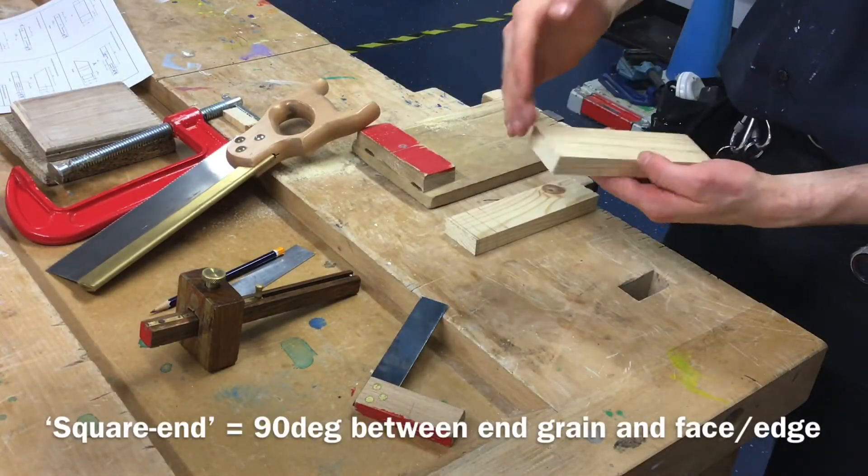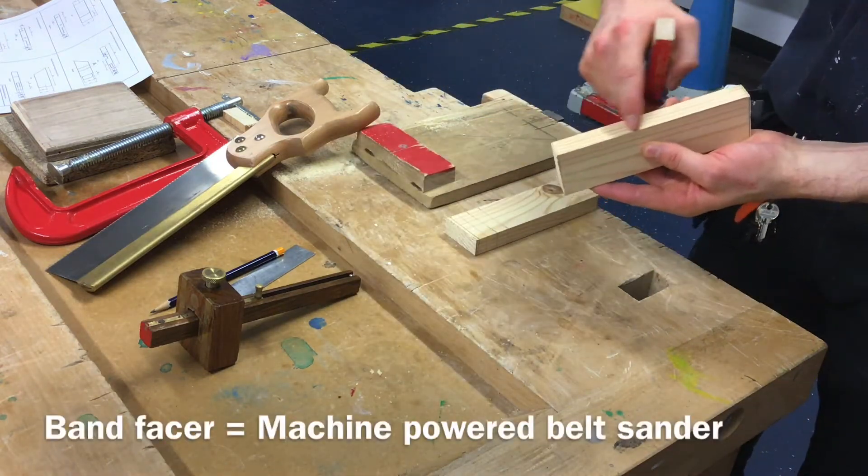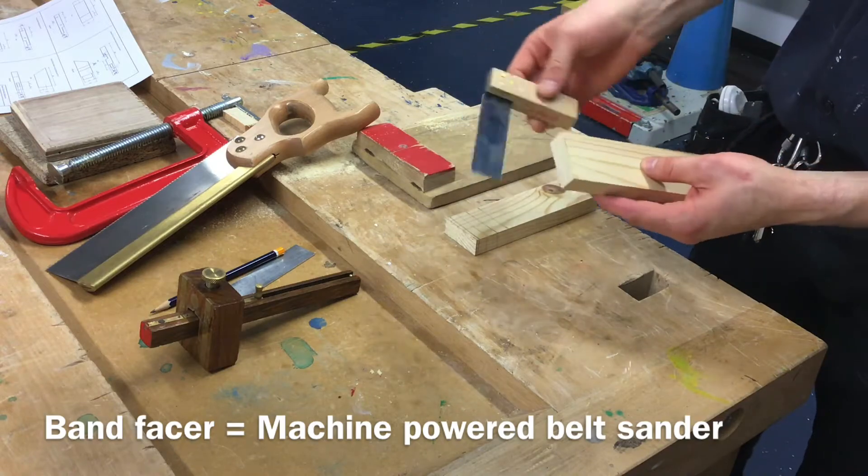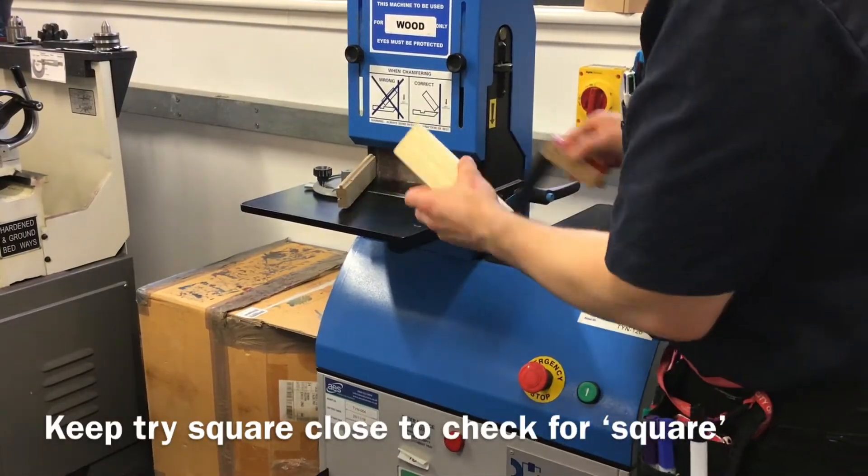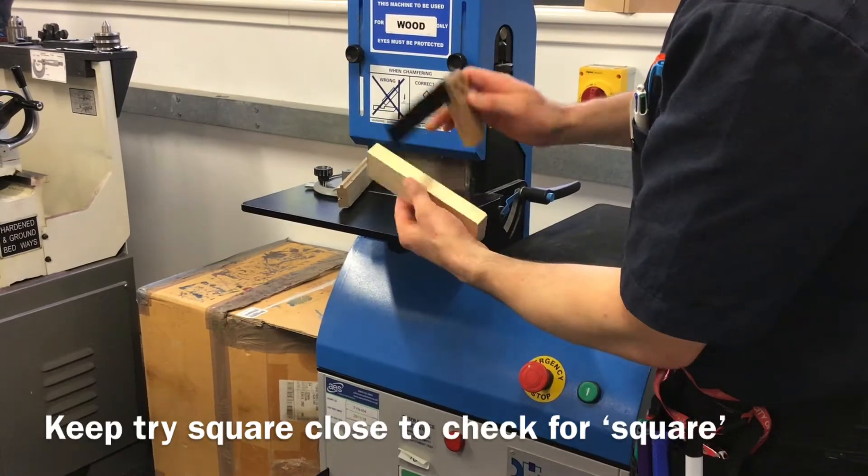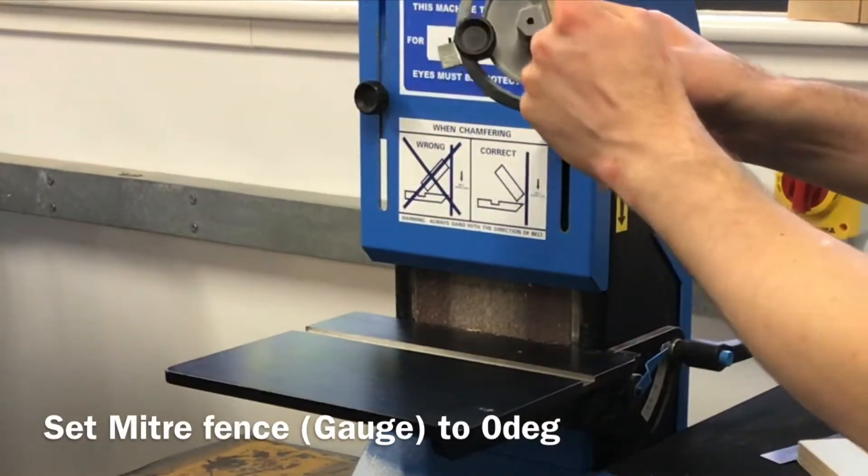Use a band facer to make sure that the angle between the end grain of the material and the face and the edge of the material are at 90 degrees with one another. Keep tri-square handy to always check after you've used your band facer that there's right angles between the edge and the end grain or the face and the end grain.